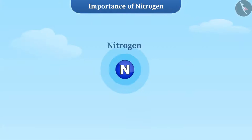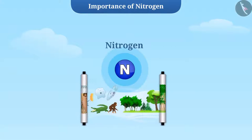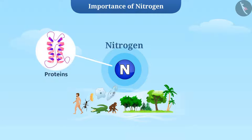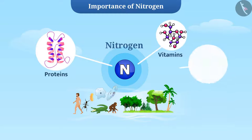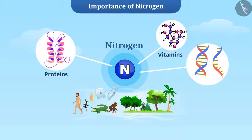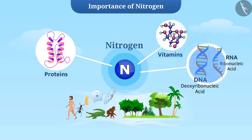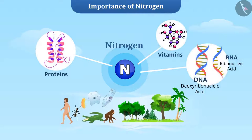Nitrogen is a very essential element for all living organisms. It is an important part of compounds like proteins, some vitamins, and nucleic acids — deoxyribonucleic acid (DNA) and ribonucleic acid (RNA). These compounds are essential for growth, maintenance, and reproduction.